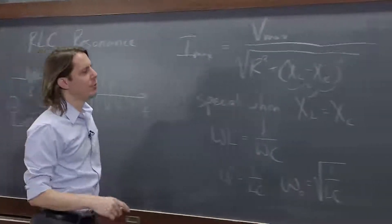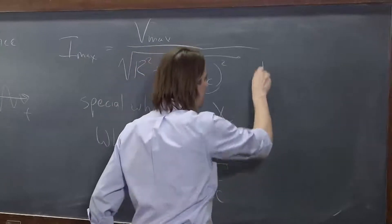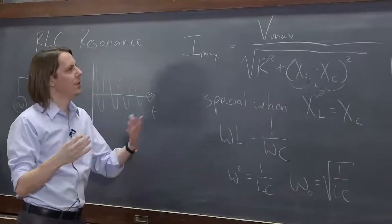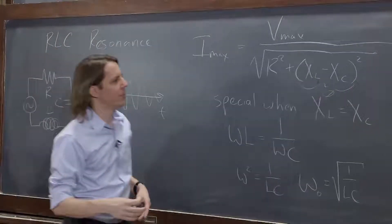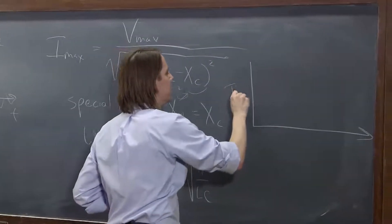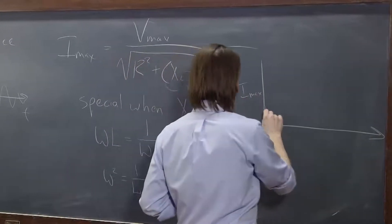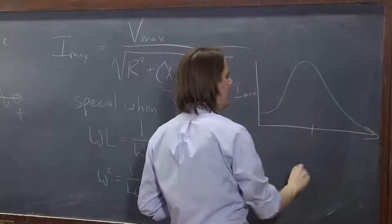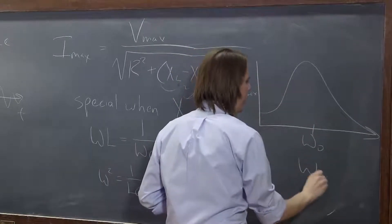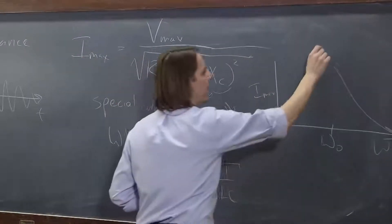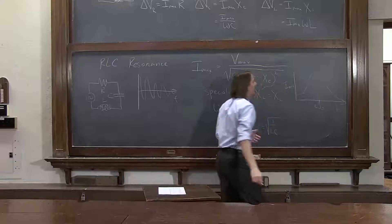This is called a resonance. If we were to plot the amplitude you would get, and amplitude could be many things. You could plot power or voltage across one element or whatever. Here we could just plot Imax, the maximum current. Then it looks something like this. It goes through a peak, and it goes through that peak at omega naught if we're plotting versus omega. Omega naught is the resonance frequency where you get the highest current.